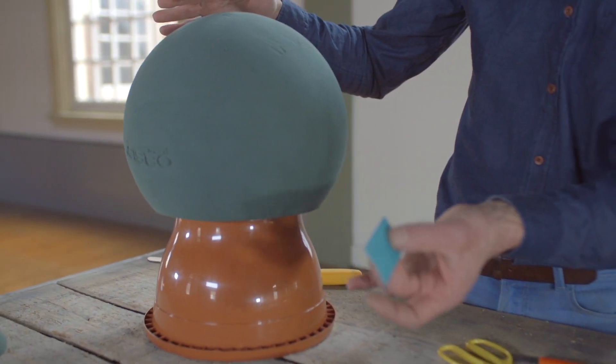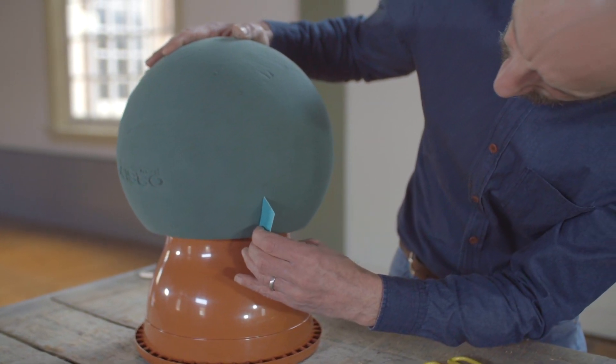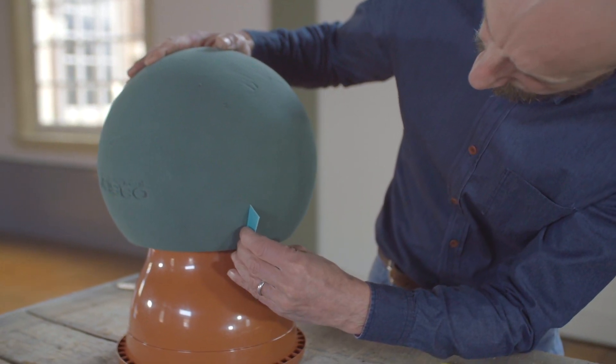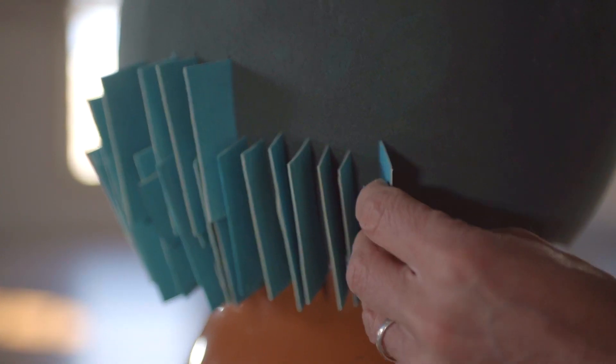Take these slices of veneer and insert them into the oasis like this. What you need to make sure is that this is following a line that would come to the top of the ball.